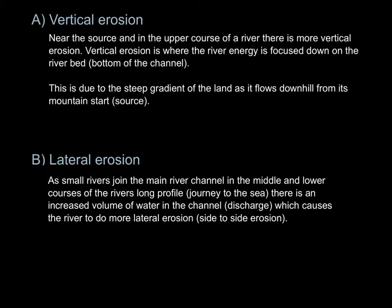As the river moves down into the middle and lower course of the river's long profile, more water joins the river channel from tributaries, so the channel discharge increases. This means that the river has more water, and as a result, it starts to go side to side — and this is called lateral erosion. Within these two categories, vertical and lateral, all four types can happen.